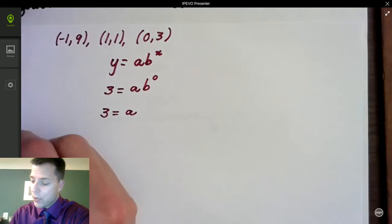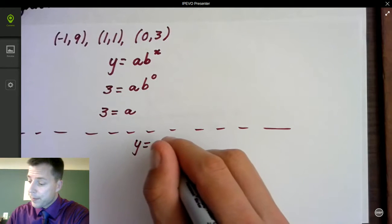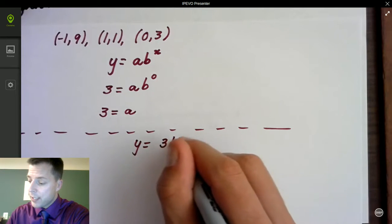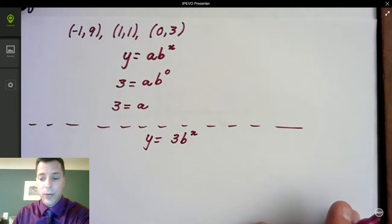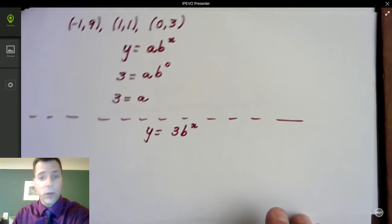so now my equation becomes y equals 3 times b to the x. So I need another point on that graph. I have 1, 1 and negative 1, 9. Let's stick with 1, 1.